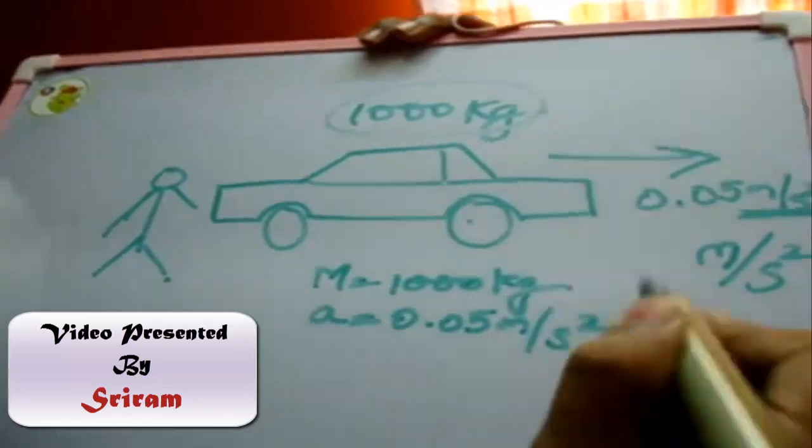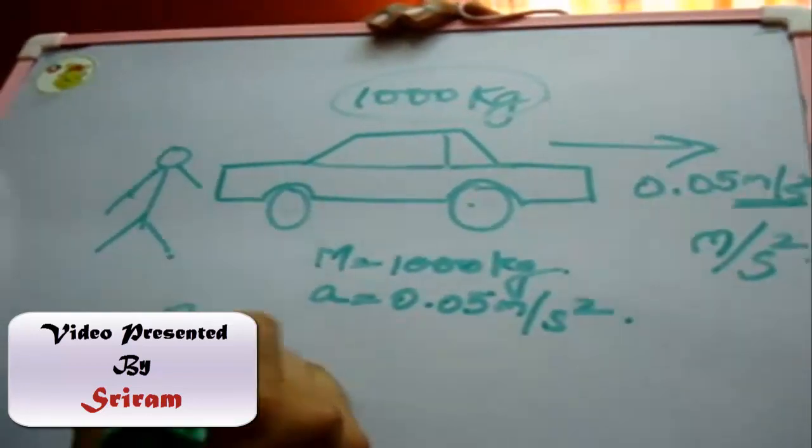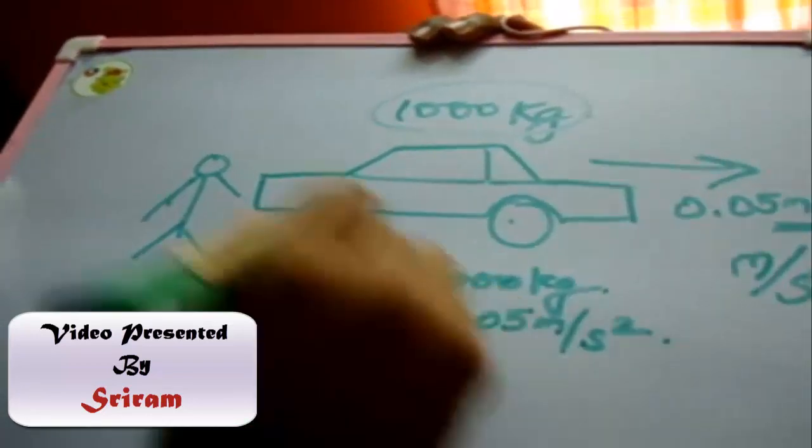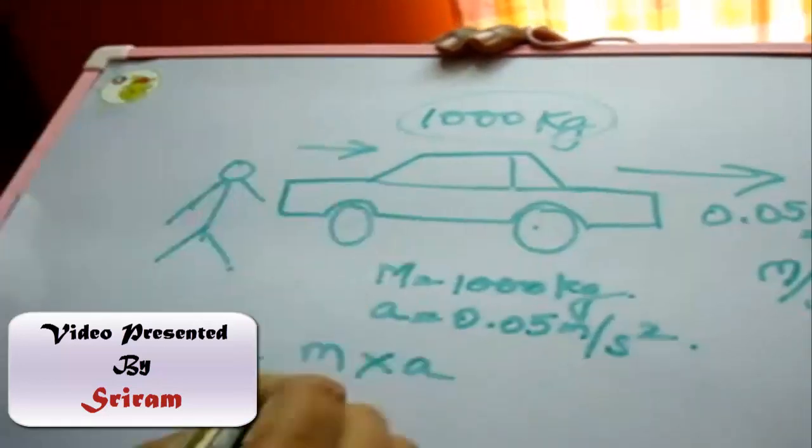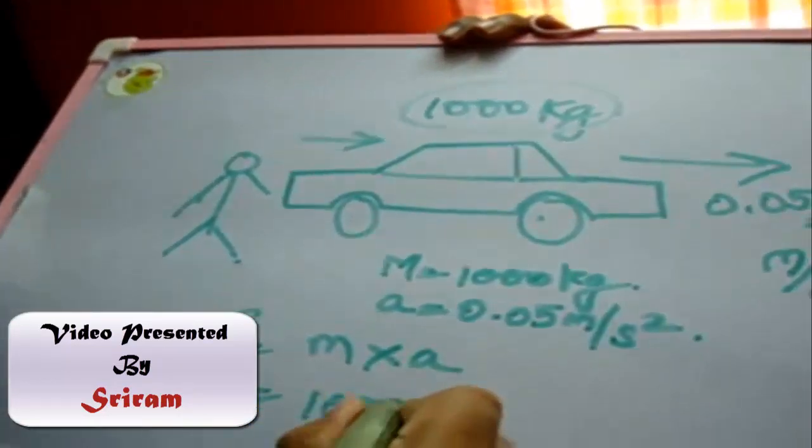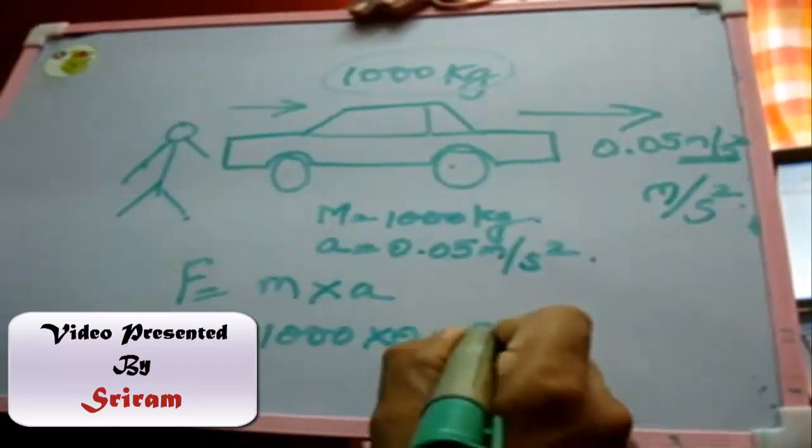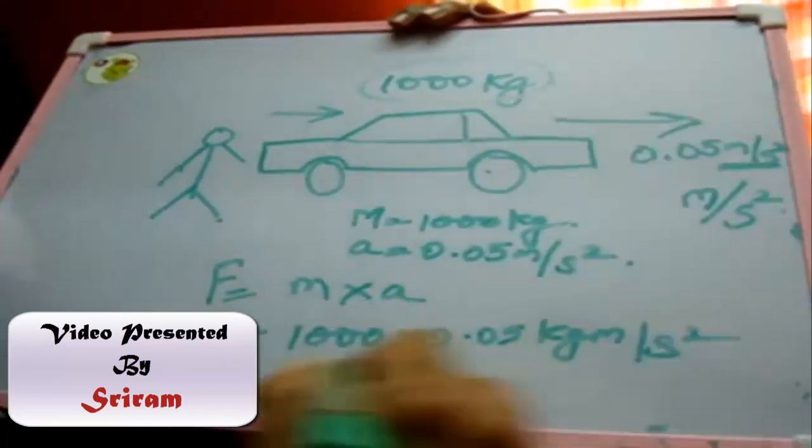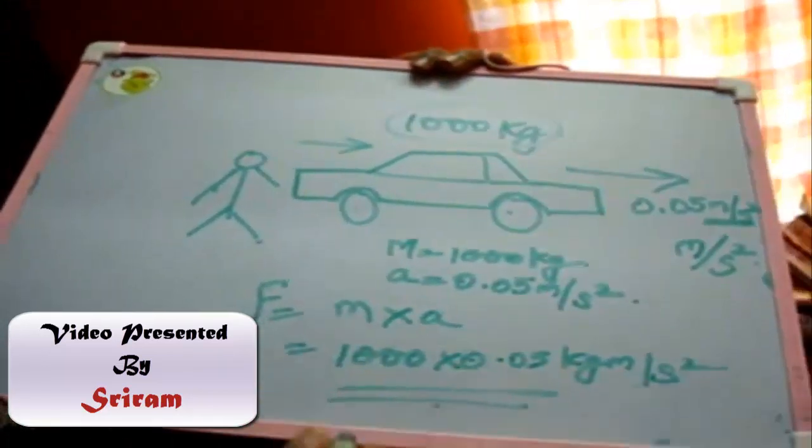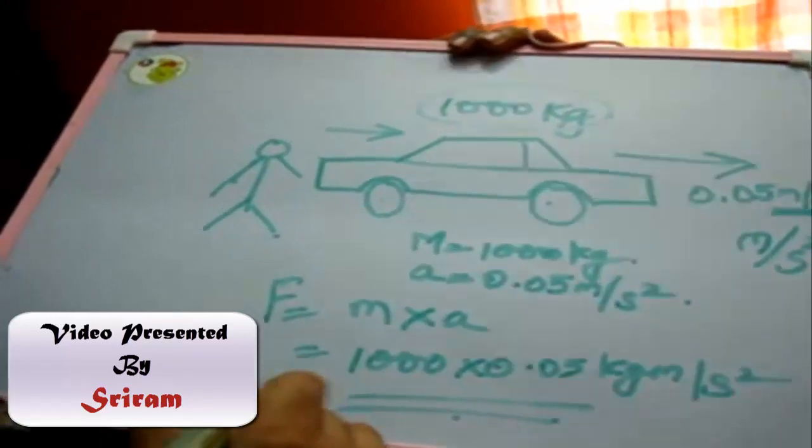So the force required to push the car in this direction by me will be 1000 times 0.05 kilograms meter per second square. This is the force that will be approximately 50 Newtons.